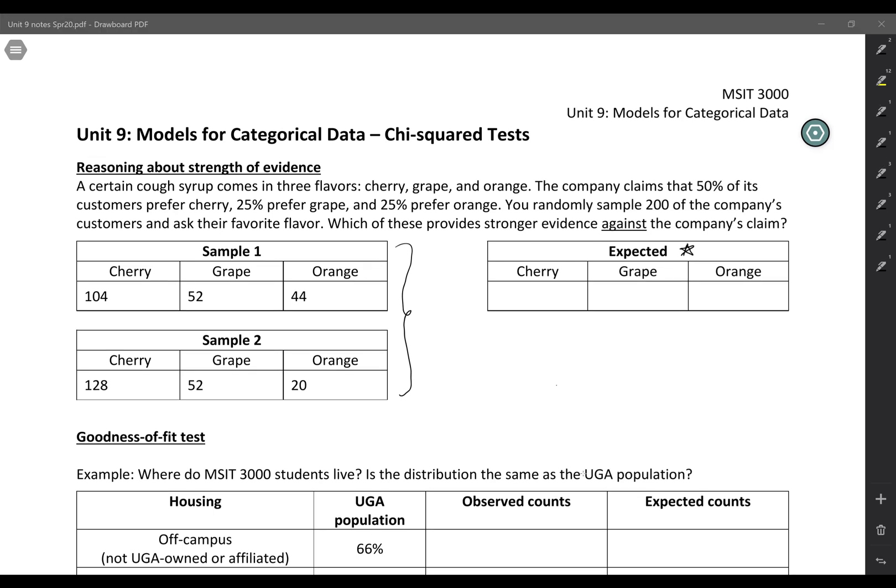Alright, so to fill in these boxes, if we sample 200 people and the company's claim is true, then we would expect 50% of those people to prefer cherry. So if we do 200 times 0.5, because 50% of them, that would be 100.